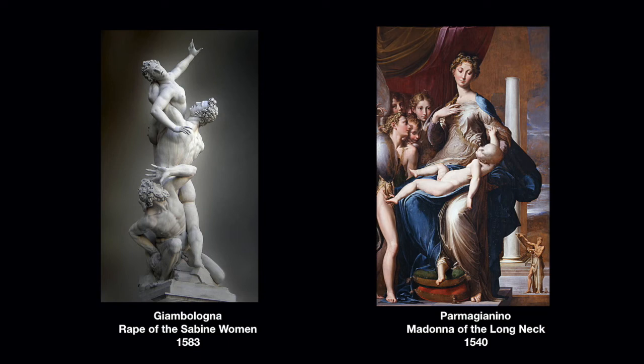Behind the man those columns are confusing — it's hard to tell where the top or bottom is, or whether it's a row of columns or just one. Even the woman holding the giant baby might be suffering from Marfan syndrome — an actual condition where a person is extremely tall and thin with elongated extremities and often scoliosis. And in the corner next to Saint Jerome there's just a foot — a disembodied foot with nobody attached to it.